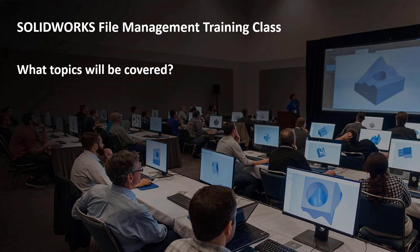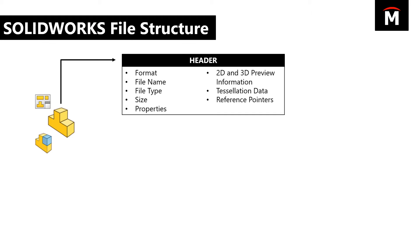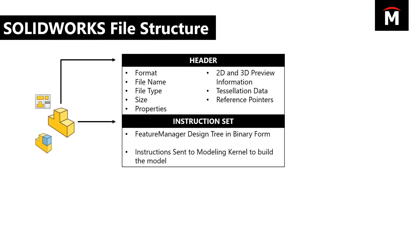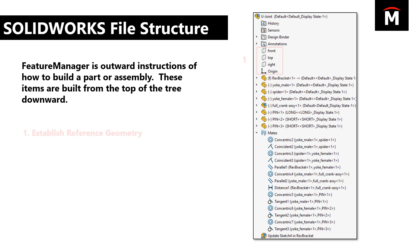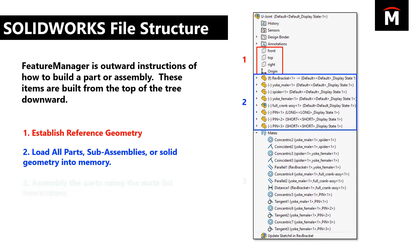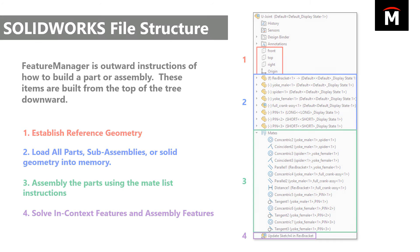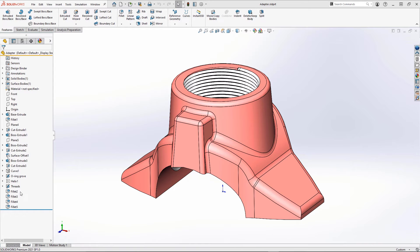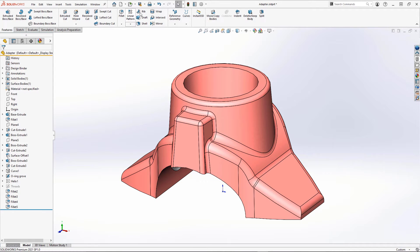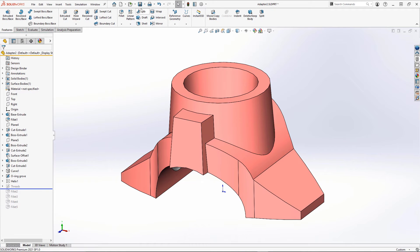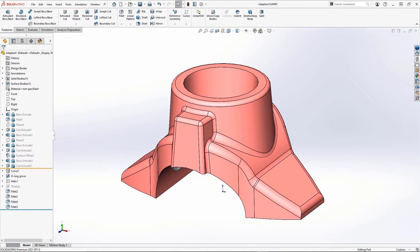Let's take a sneak peek at some of the topics covered in this file management course. We'll start out by talking about the SOLIDWORKS file structure — header, instruction sets, and database in relation to parts and assemblies. We'll also look at specific techniques available to simplify our parts and assemblies and even reduce items such as rebuild time.